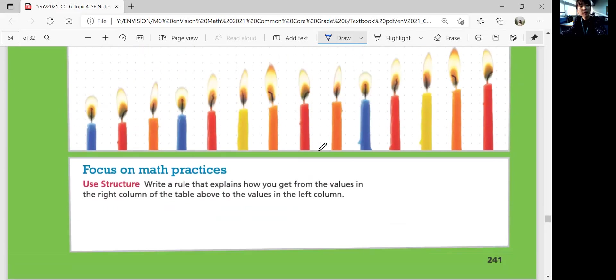Focus on Math Practices. Write a rule that explains how you get from the values in the right column of the table above to the values in the left column. What was the pattern we looked at? Multiply B by 4 to get C.